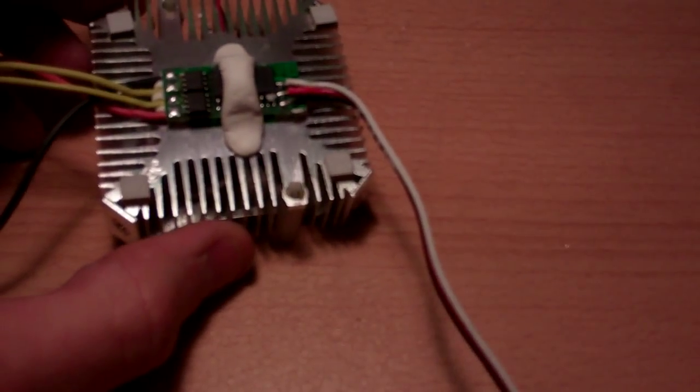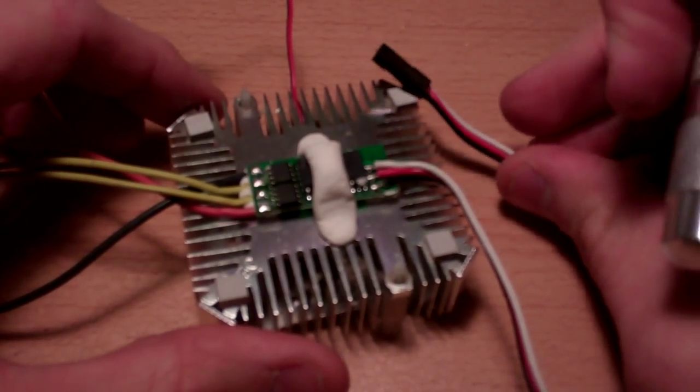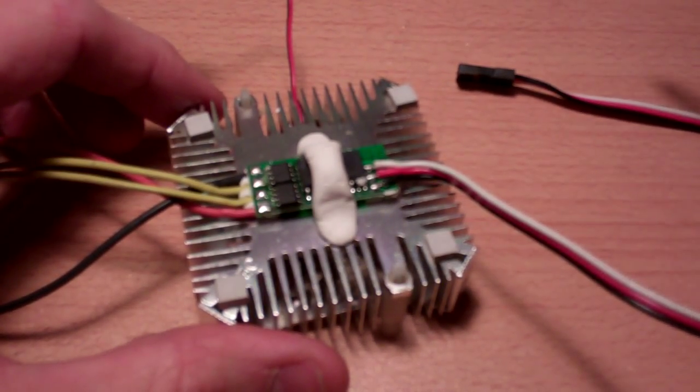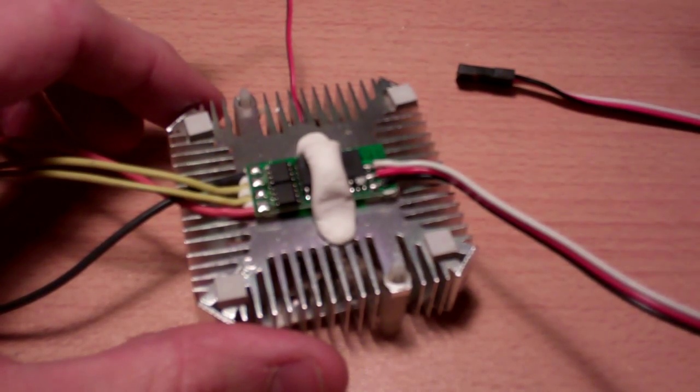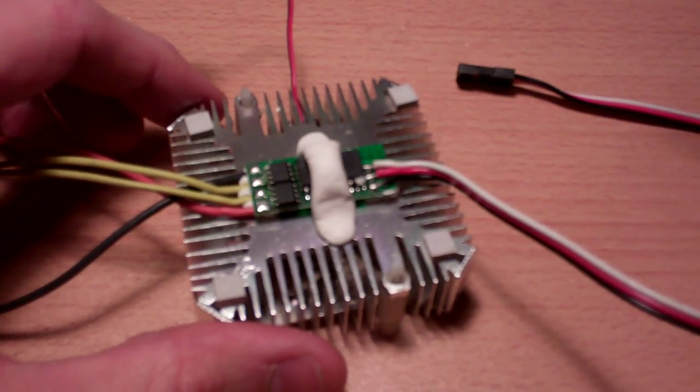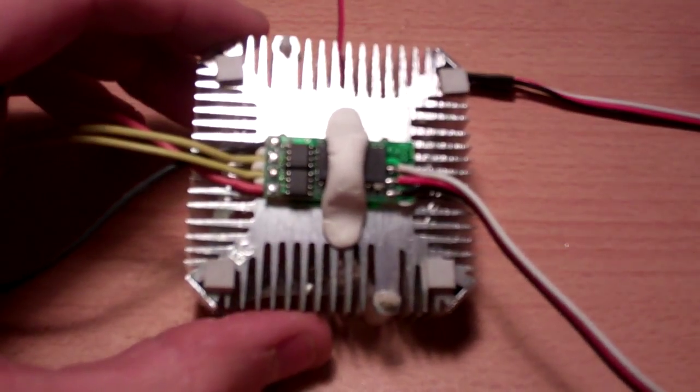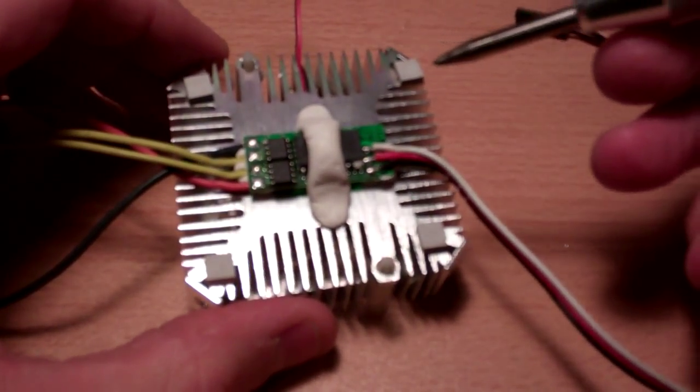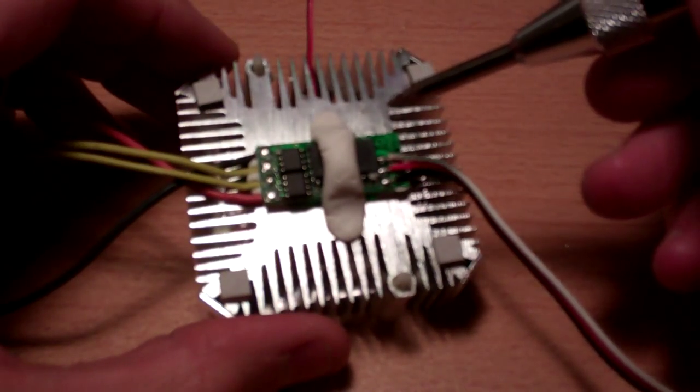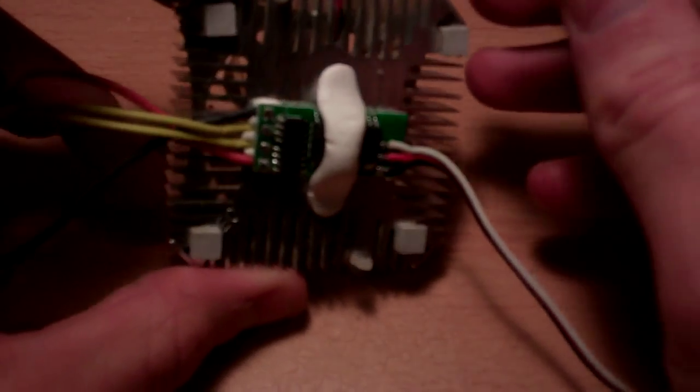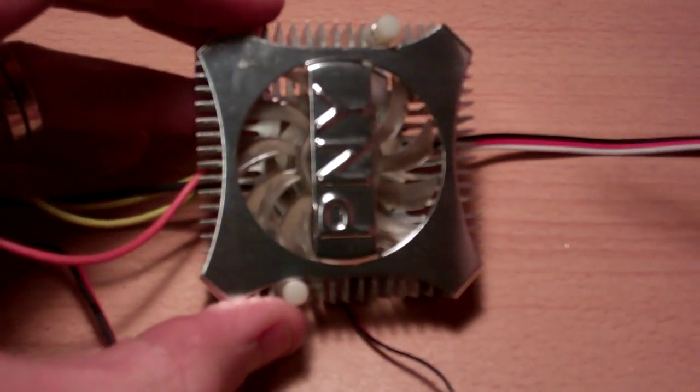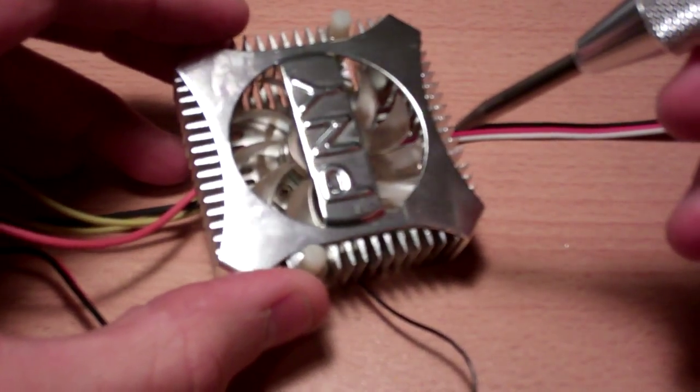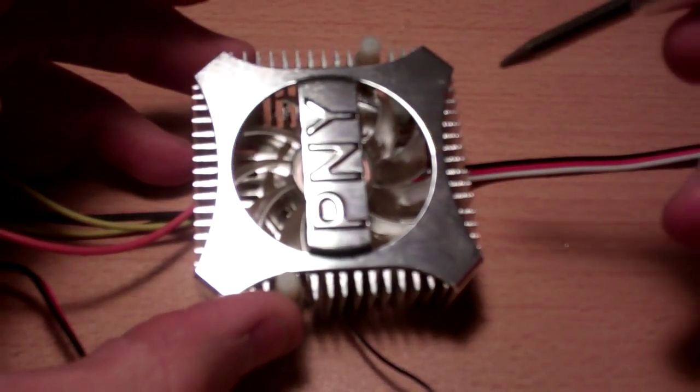I was using the 5 volt output to the microcontroller that I'm using, so it kept cycling the microcontroller when it shut down. It was a big issue and what I ended up doing, what you see now, is I affixed it to this heatsink from a PNY graphics card.